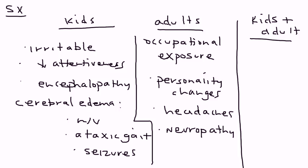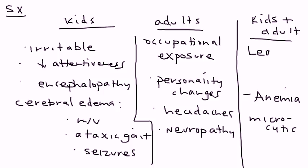In both kids and adults, both will present with the physical exam findings and lab findings of anemia — and it's a microcytic anemia. The reason is because lead interferes with the normal formation of hemoglobin.